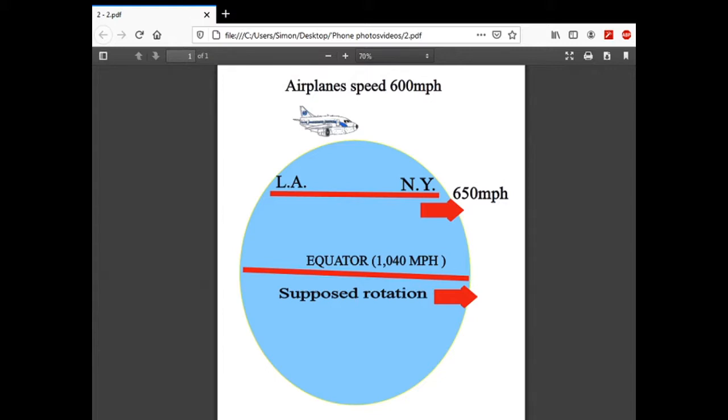Okay, with a supposed rotation from east to west, west to east actually. So let me ask you, let me posit this idea for you. Here we have an airplane. This airplane is traveling at a speed of 600 miles an hour, which I think is way above commercial aircraft anyway, but we're going to be generous. I'm going to be very generous to you ball believers.